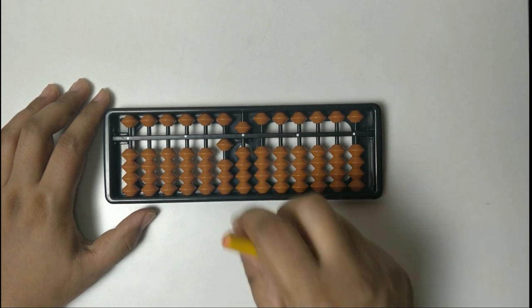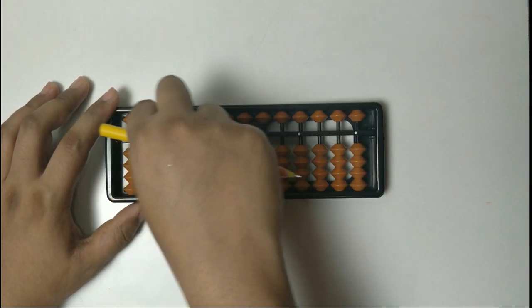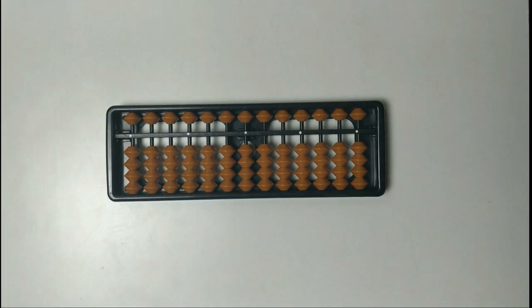So this is the first formula of positive components or we call big friends. The second formula is plus 8. Plus 8 is equal to 10 minus 2. So plus 8 is equal to 10 minus 2.